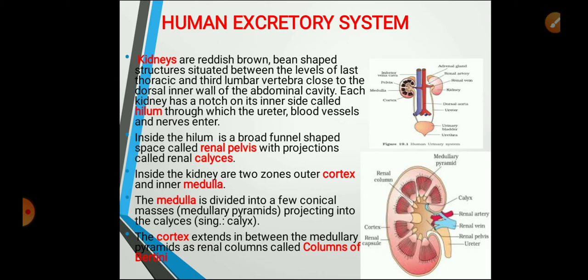Remember all these points about the structure of the kidney. You may get a question: explain the structure of the human kidney with a neat labelled diagram. Key features: reddish-brown bean-shaped structure with a notch called the hilum; two zones — outer cortex and inner medulla; renal pelvis with renal calyces; medullary pyramids inside the medulla; and columns of Bertini between the medullary pyramids.